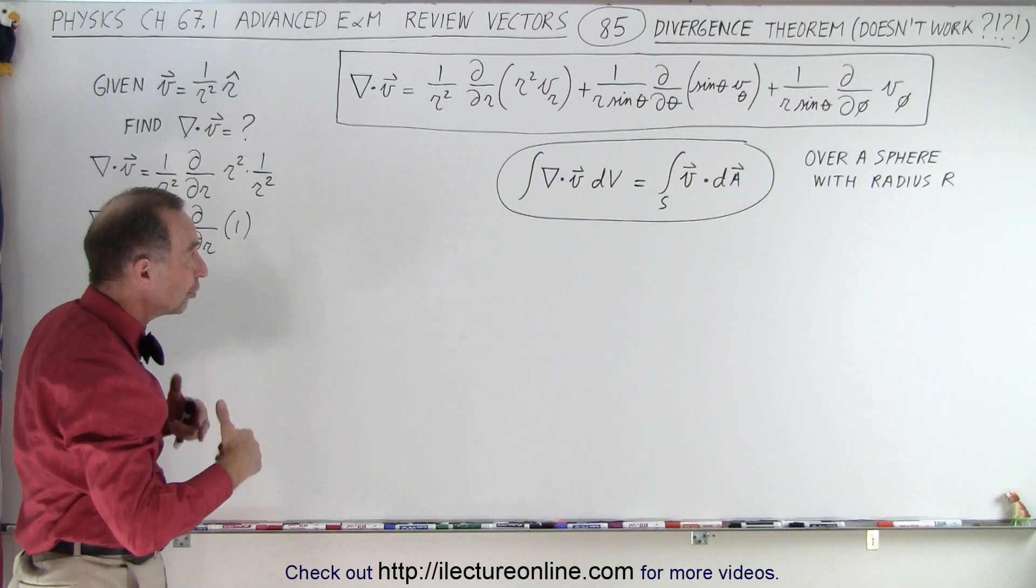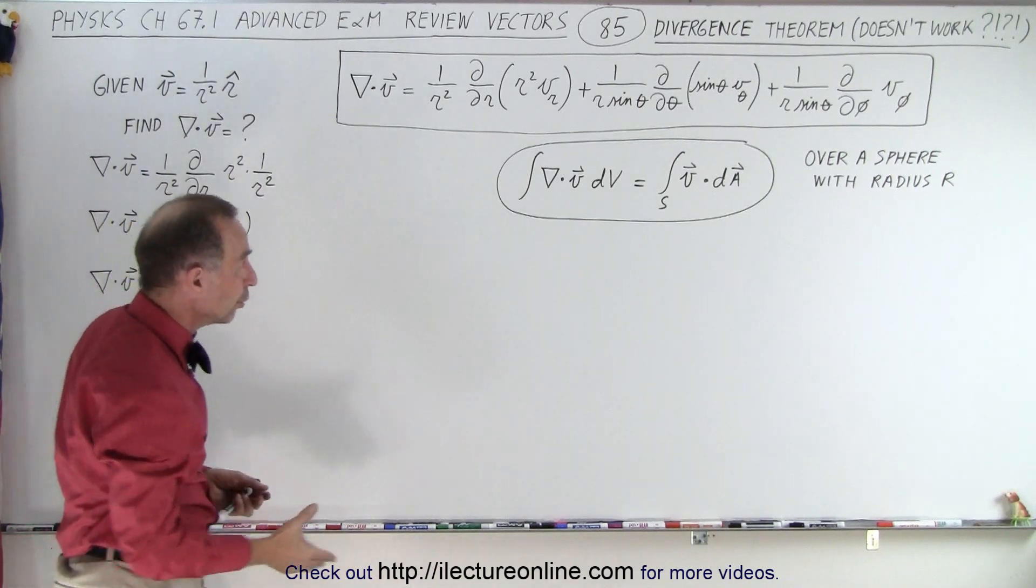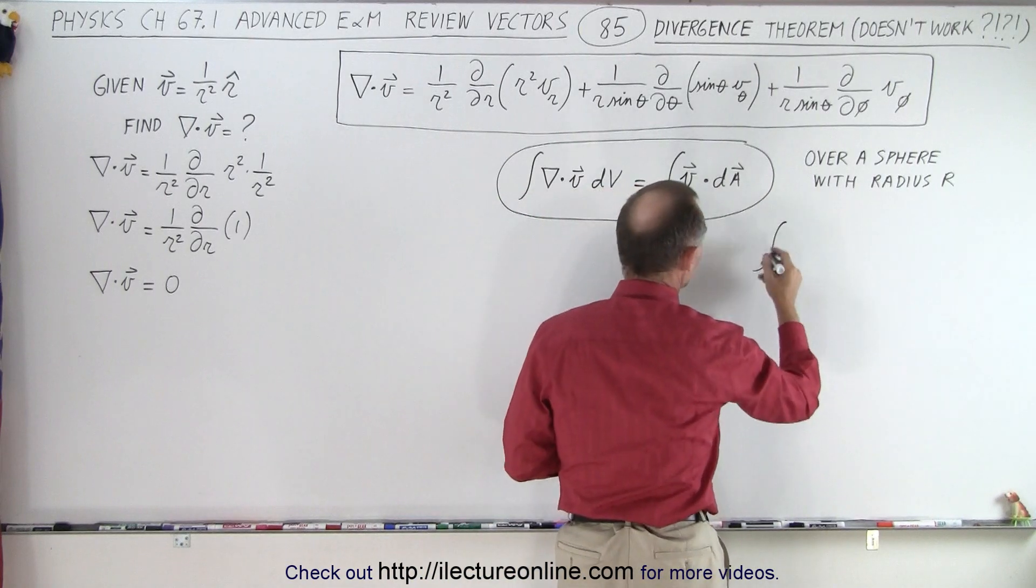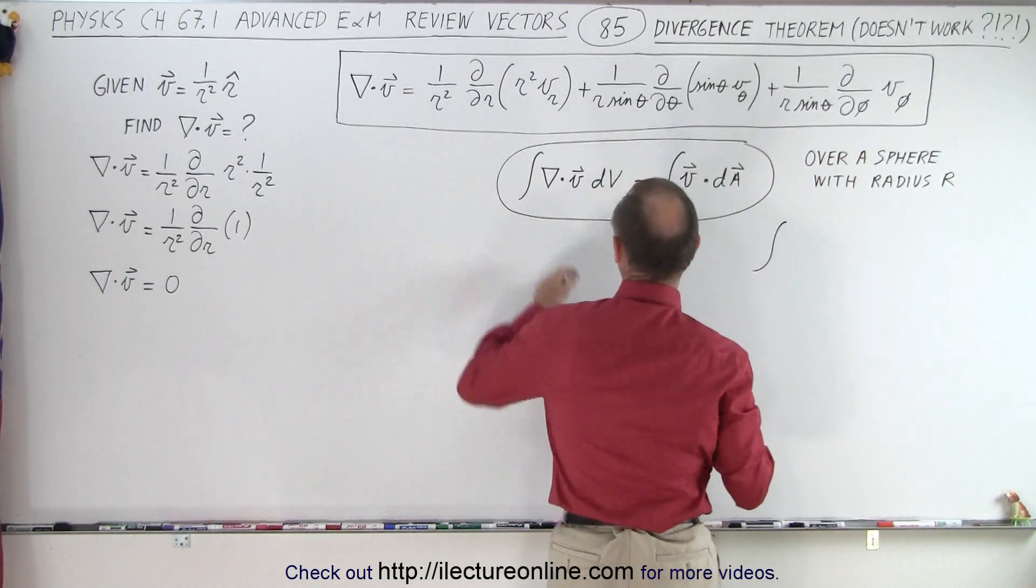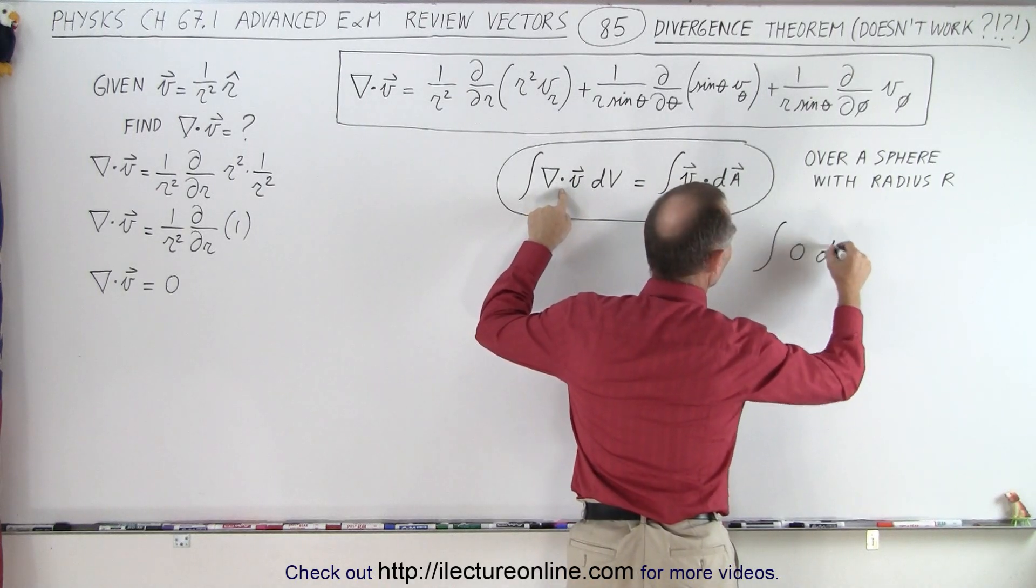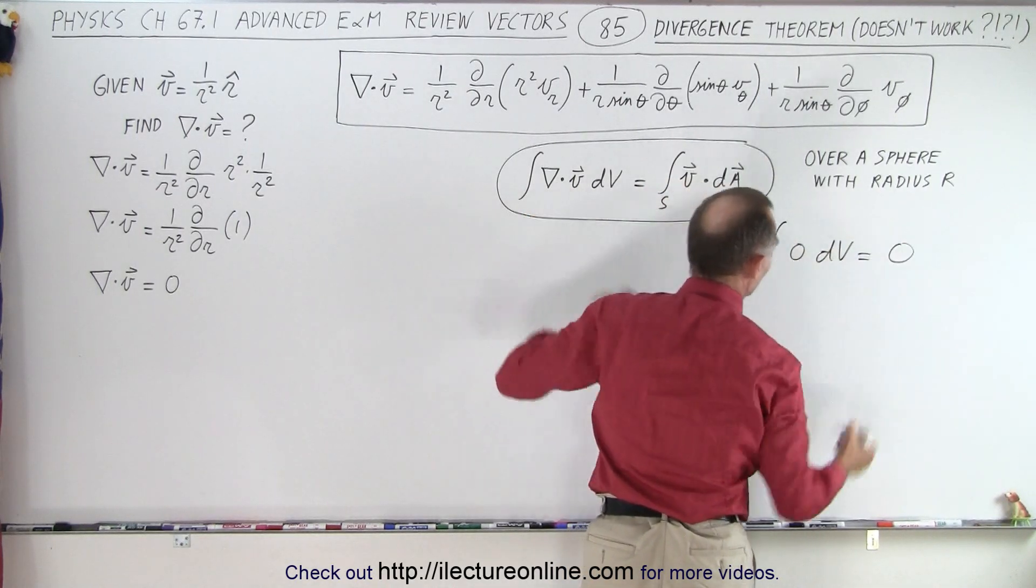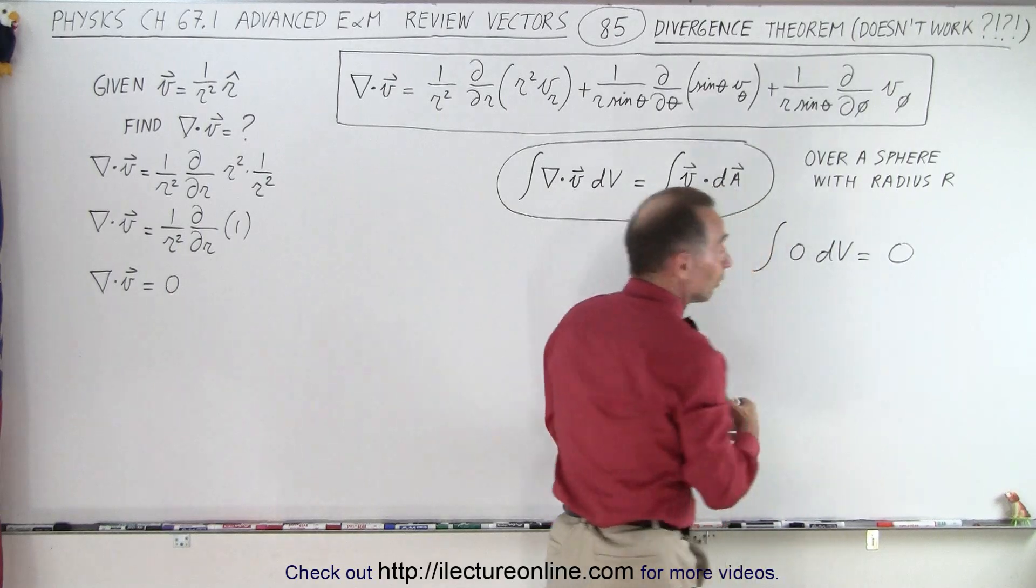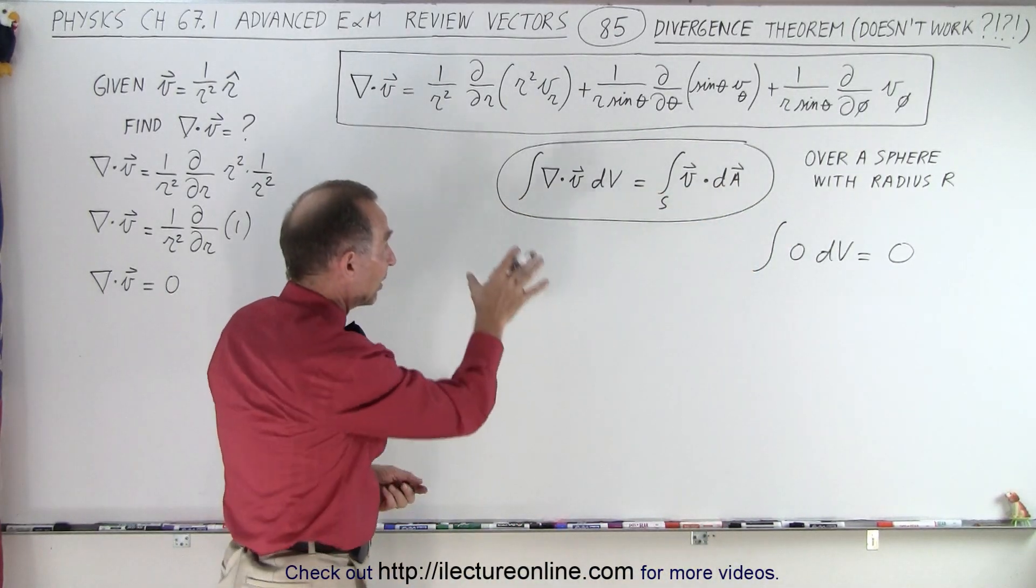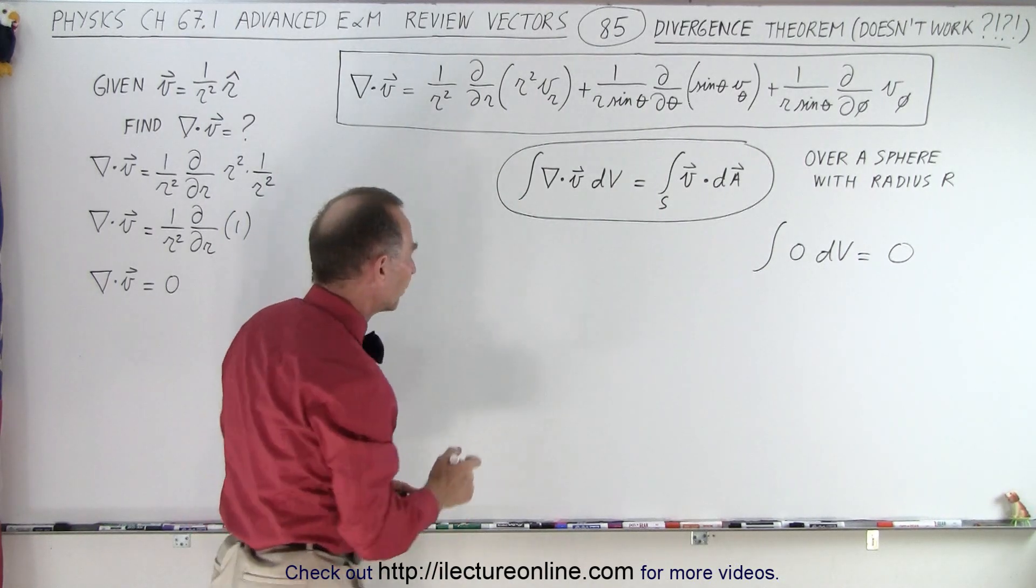Now when we try to throw that into the divergence theorem, notice the left side. When we do the left side of this theorem, we get the integral—and again we're going to integrate over a sphere with radius r. We get the divergence, which is 0, times dv. The integral of 0 dv is still going to be 0. That's the left side of that equation.